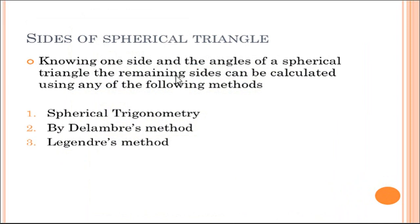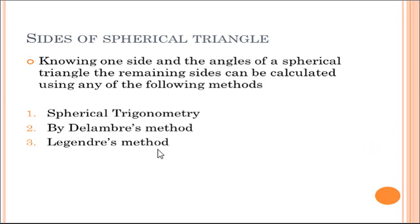For the sides of the spherical triangle, knowing one side and the angles, the remaining sides can be calculated using any one of the following methods: first, the spherical trigonometry method; second, Delambre's method; third, Legendre's method.